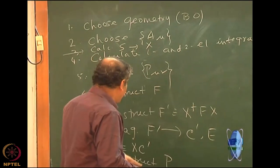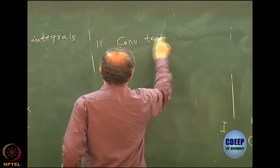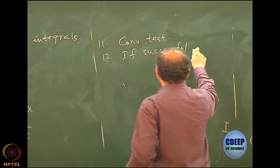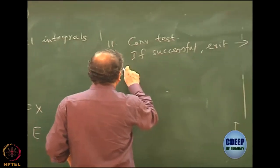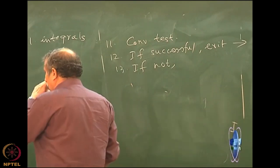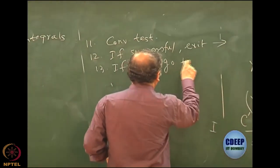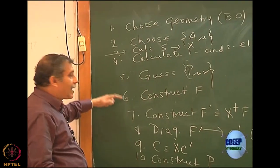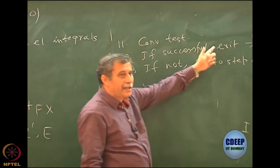Step 10: subject the new P to the convergence test — compare with the previous iteration's P using the sum of squared differences. If converged, exit the loop and print all outputs: energies, coefficients, everything. If not converged, go back to Step 6 and reconstruct F, F', diagonalize, reconstruct C and P, and repeat. Also include a maximum iteration exit to avoid infinite loops.